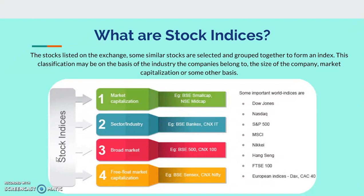Another parameter of indices is sector or industry — automobile, pharma, IT, etc. There are also broad market indexes made of many good stocks. Nifty is made up of 50 stocks; Sensex is made up of 30 stocks. Then there are broader indexes like CNX 200 — 200 good Nifty companies — Nifty Next 50, and BSE 500 with 500 good companies. These represent market sentiment across different industries and sectors.